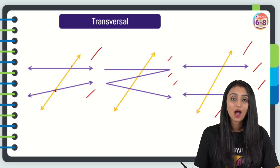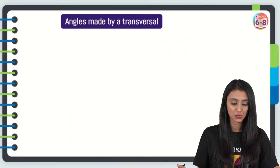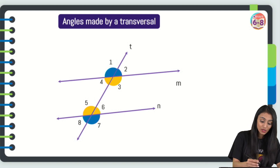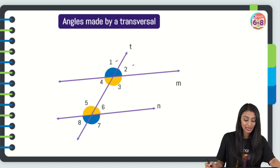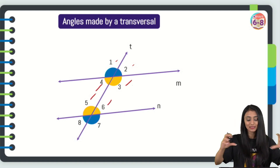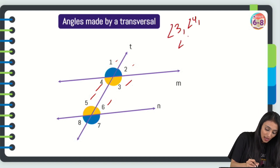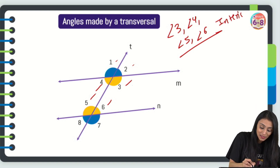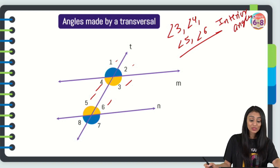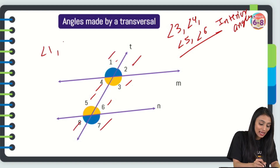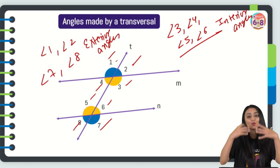Let's see what angles are made by a transversal. Here we have two lines intersected by a transversal T, and we can see angles formed: 1, 2, 3, 4, 5, 6, 7, and 8. Angles 3, 4, 5, and 6 are inside the lines — these are the interior angles. The angles marked in blue — angle 1, angle 2, angle 7, and angle 8 — are exterior angles because they are formed outside the lines.